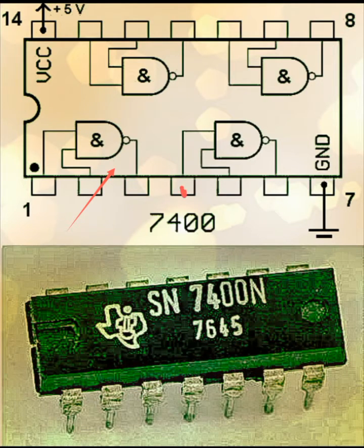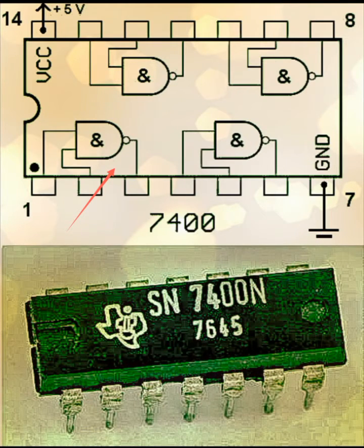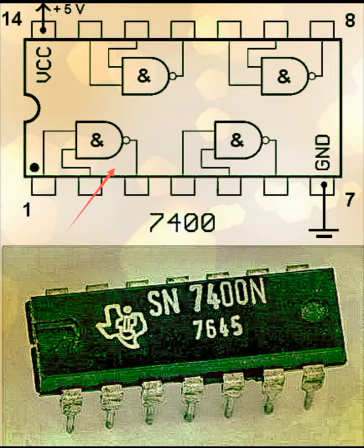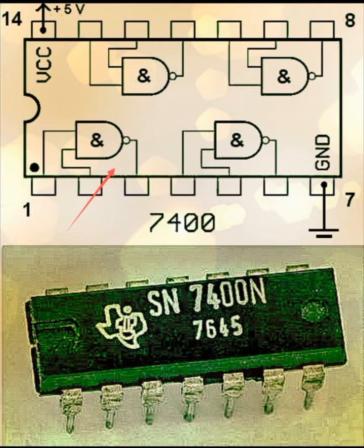This is pin number four, this is pin number five, this is pin number six, and pin number seven is the ground pin — logic low. Then comes pin number eight, pin number nine, pin number ten, pin number eleven, pin number twelve, pin number thirteen, and finally VCC is pin number fourteen, which is logic high — the supply voltage of five volts.